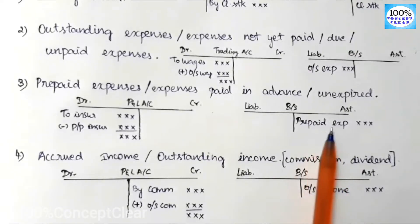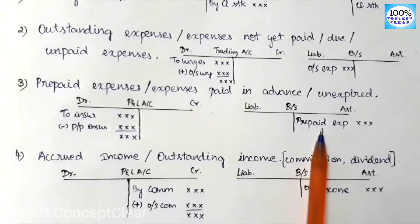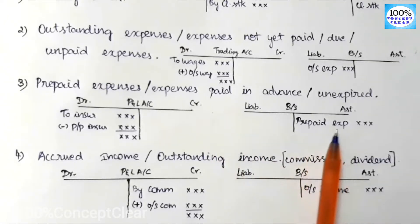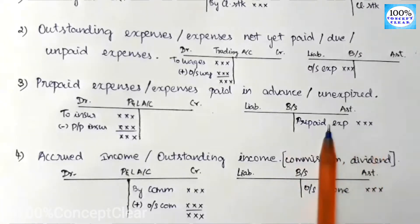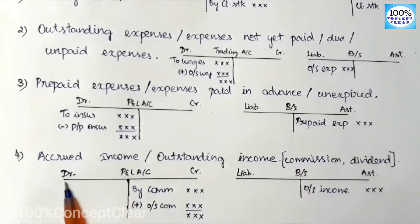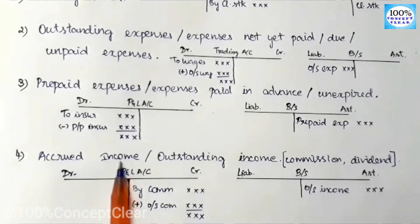On the asset side of the balance sheet, prepaid expenses represent the future benefit — next year we will use or recover that amount. We will show it as an asset in the balance sheet.